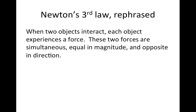Instead, with this definition, what we would say is we have two objects interacting — me and the Earth. The Earth is pulling me down; that's a gravitational force between me and the Earth. I'm being pulled downward by it. The reaction, or the Newton's Third Law pair force to that, would be the force that I'm exerting upward on the Earth through gravity. It's still a gravitational attraction — I get a force downward from it, the Earth gets a force upward from it. And those two forces are equal in size, they happen simultaneously, and they're opposite in direction.